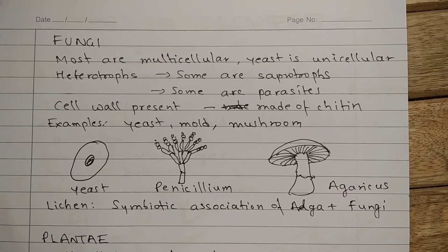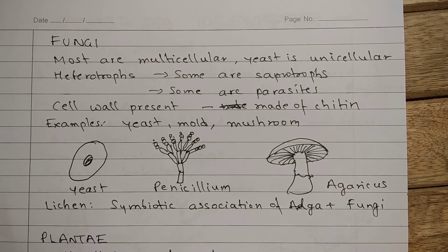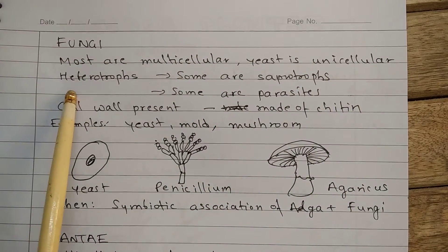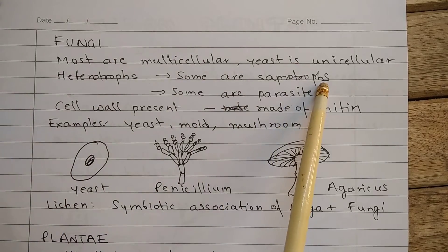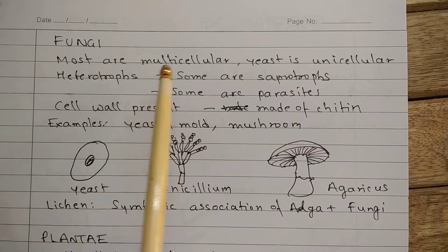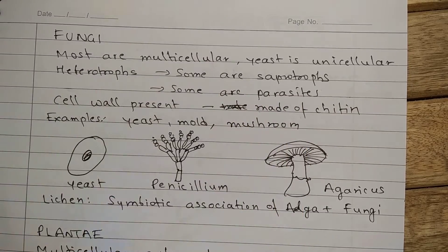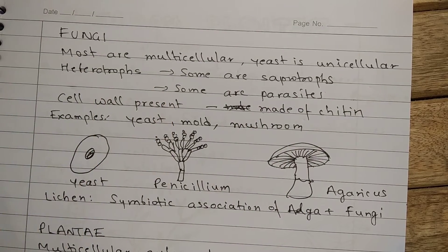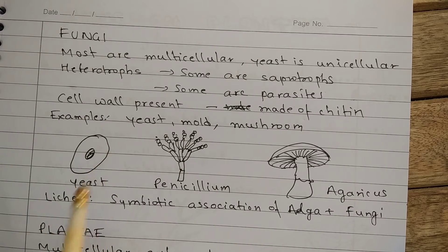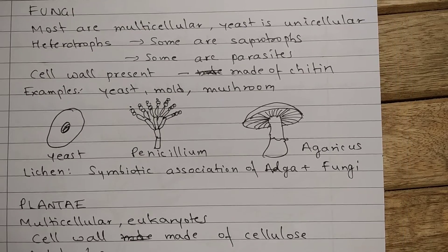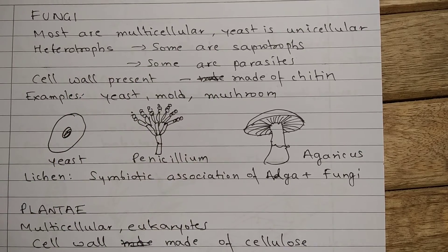The next kingdom is Fungi. Most of the fungi are multicellular, but yeast is a unicellular fungus. Fungi are heterotrophs — some of them are saprotrophs and some are parasites. Those organisms which feed on dead remains of plants or animals are called saprotrophs. In this case, the organism secretes enzymes on the food, and once the enzymes convert the food into simple substances, those simple substances are absorbed. So digestion takes place before ingestion of food, and that is why this is called saprotrophic nutrition.